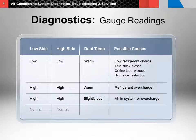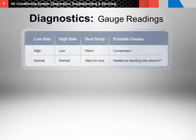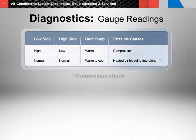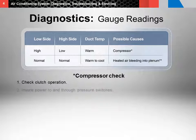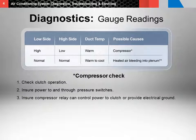Normal readings on both sides with a warm duct temperature may indicate moisture in the system or too much oil. If you record a high reading on the low pressure gauge and a low reading on the high pressure gauge with a warm duct temperature, there may be a problem with the compressor. Check the compressor with these steps: (1) Run a fused wire directly from the battery to the compressor to check for clutch operation — this bypasses the pressure switches and relays. (2) Ensure power is going to and through pressure switches; you can jump the contacts on the pressure switch to see if you have clutch engagement. (3) Ensure any compressor relay, if installed, can control power to the compressor clutch or provide electrical ground — check the OEM service manual for specifics.